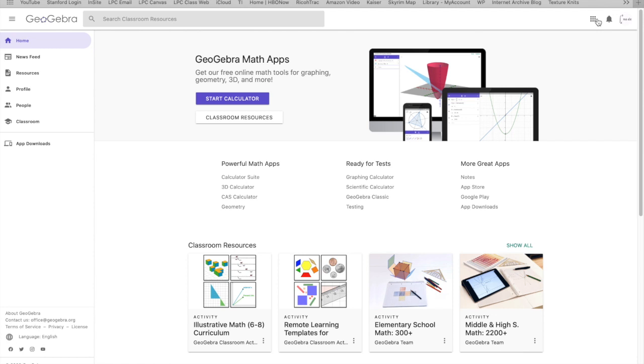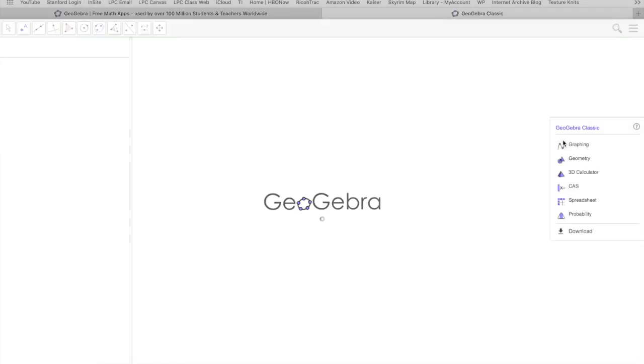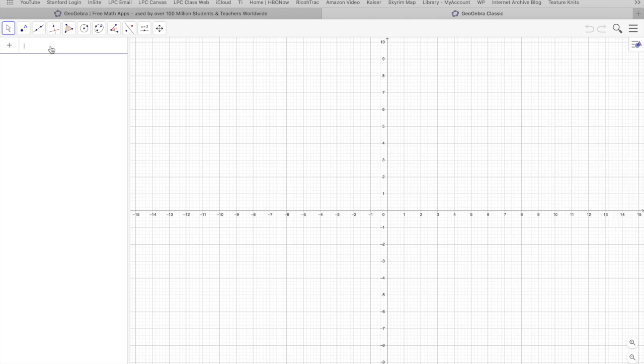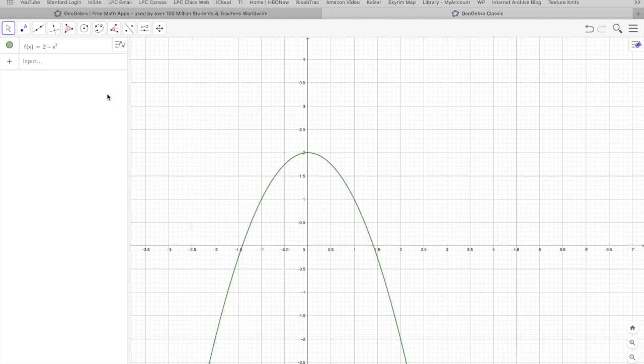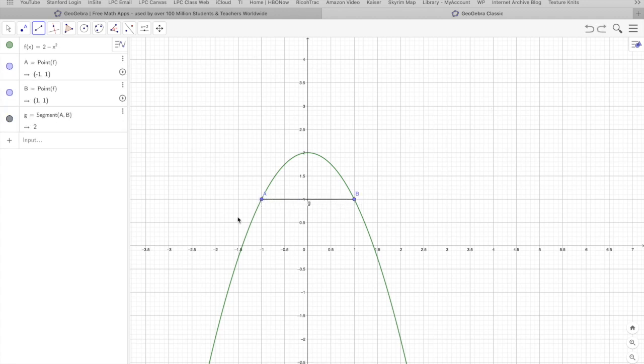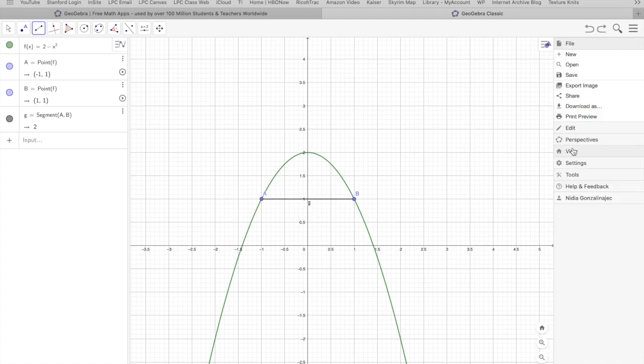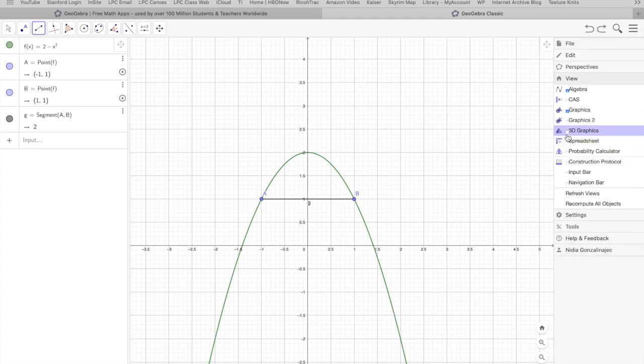So here's GeoGebra. If you're going to follow along you want to go ahead and click on GeoGebra Classic. Let's type in f of x equals 2 minus x squared. The cross-sections are perpendicular to the y-axis so I'm going to draw a segment of one cross-section from here to here. Now that this is done I want to view, so I'm going to click on these three lines, go to view, and I want to see my 3D graphics.